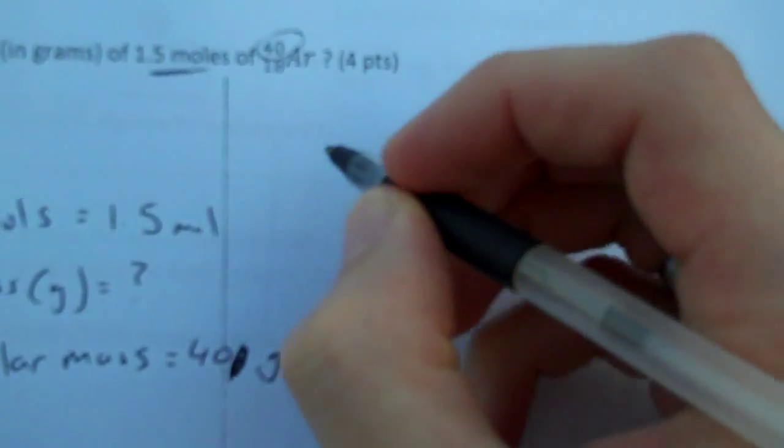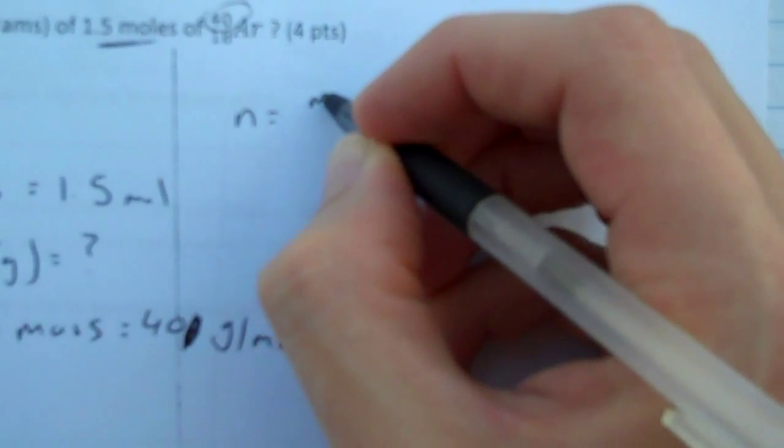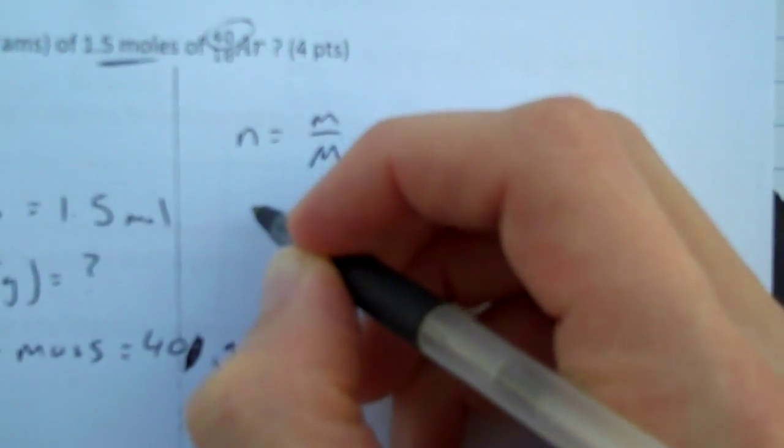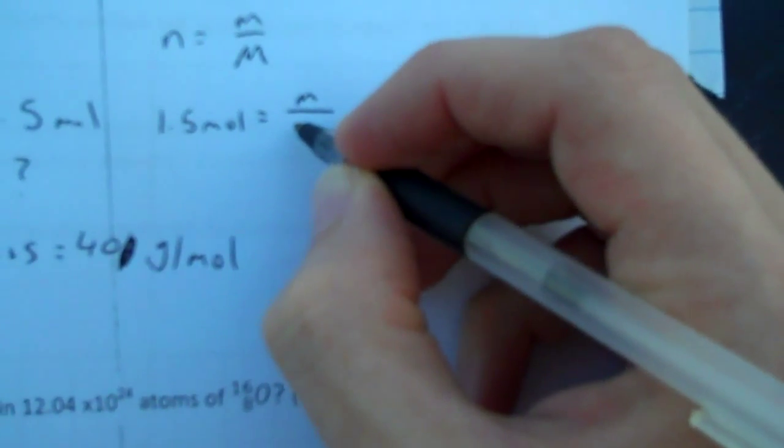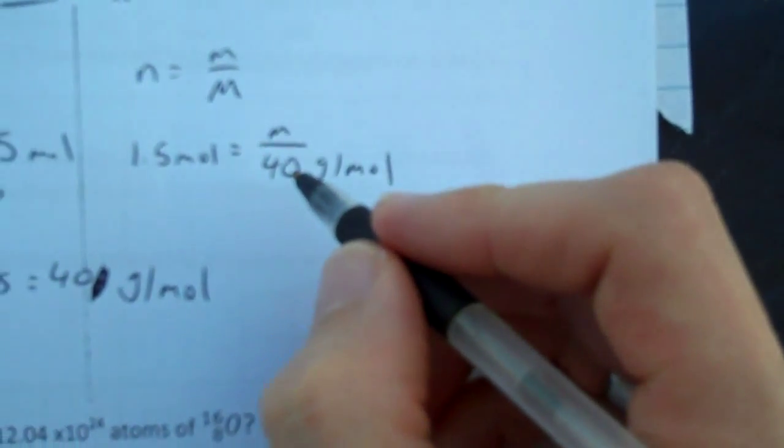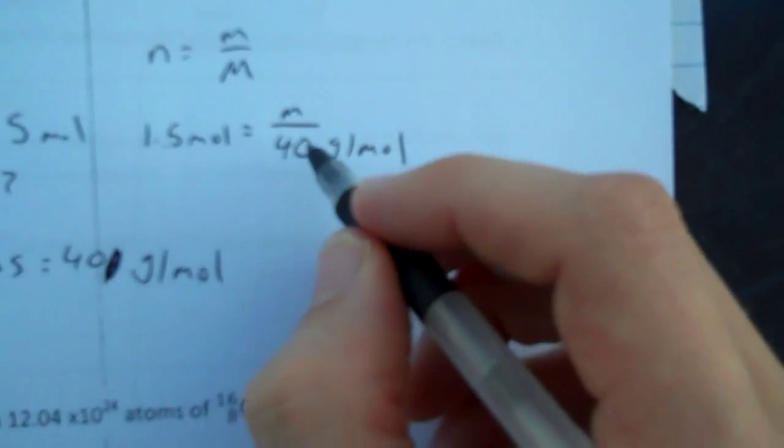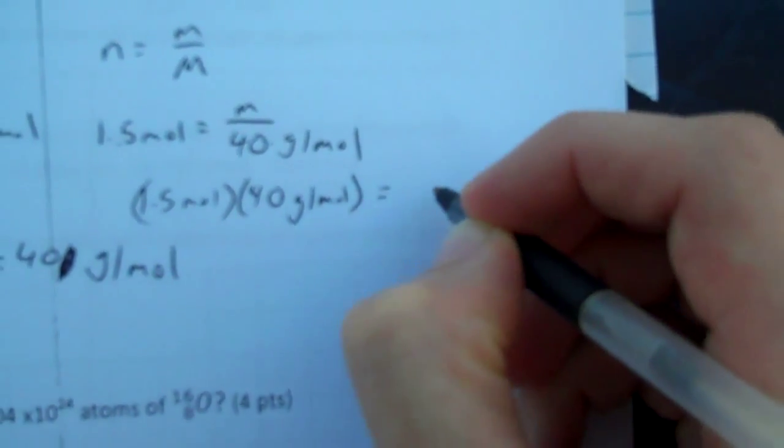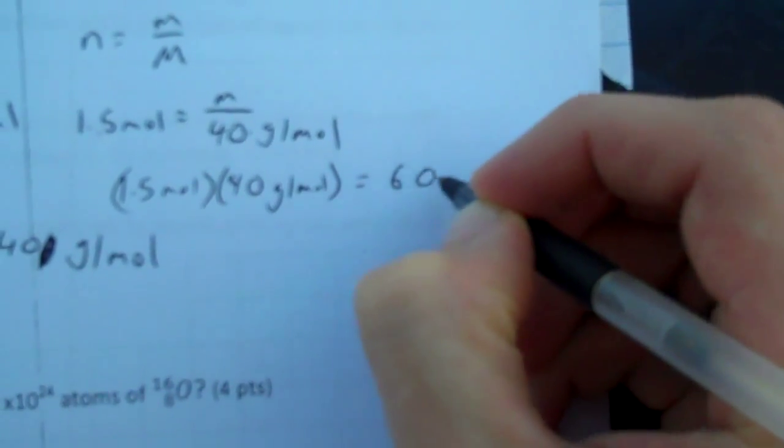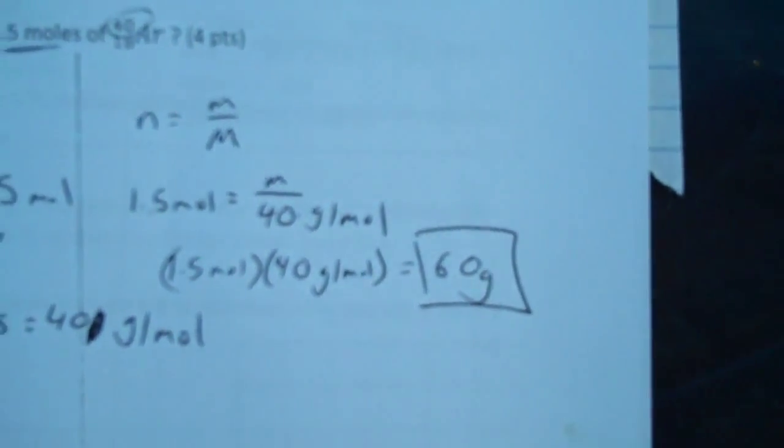So I simply put these numbers into my equation. 1.5 moles equals little m, that's my unknown, over 40 grams per mole. I rearranged this equation, so I'm multiplying 1.5 moles times 40. 1.5 mole times 40 grams per mole equals 60 grams. Circle my final answer.